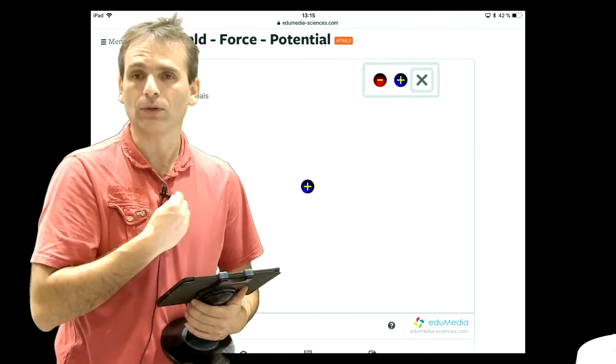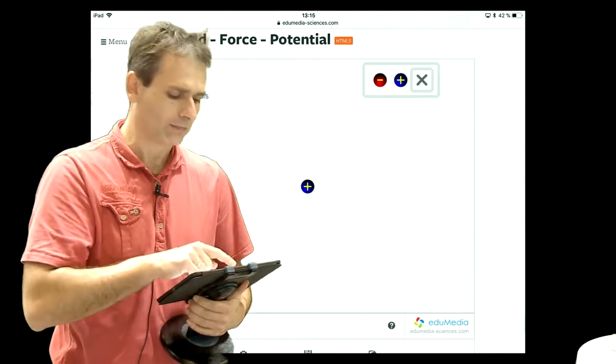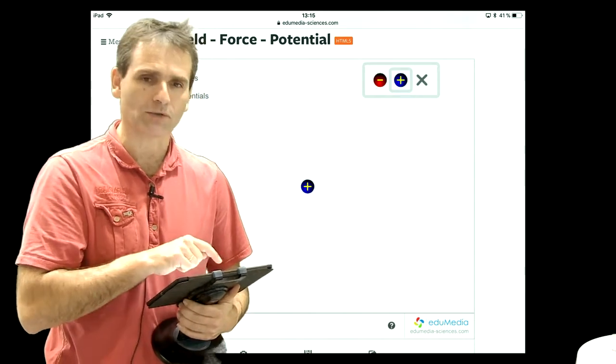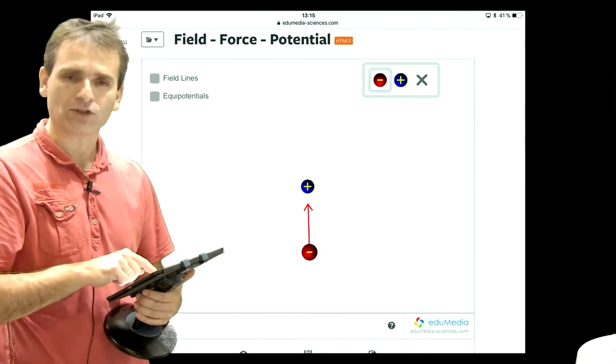And the best way for us to illustrate this perturbation is, for example, to add another charge. For example, here I will make a charge, a minus charge.